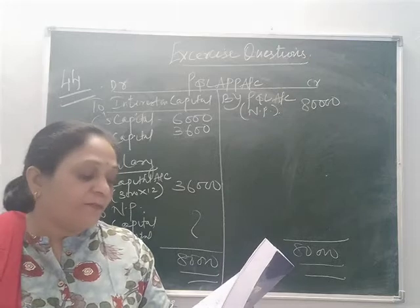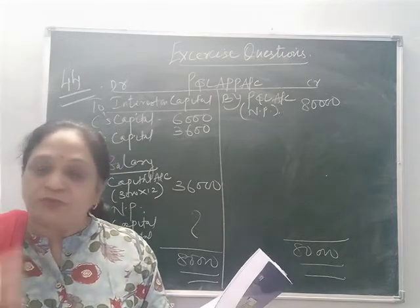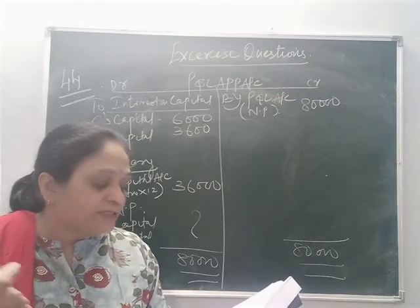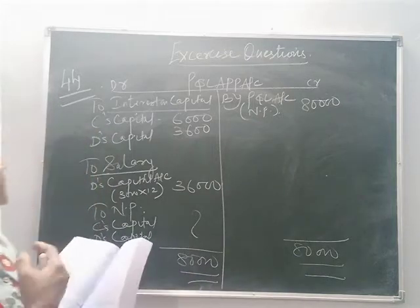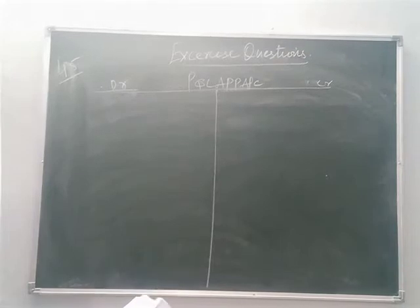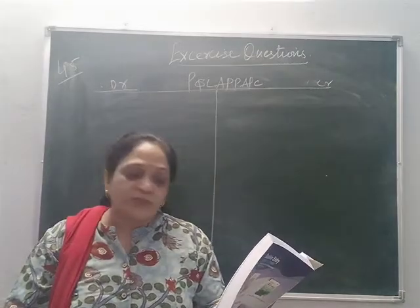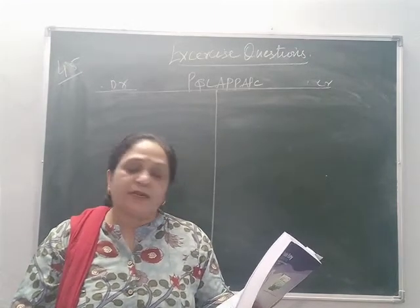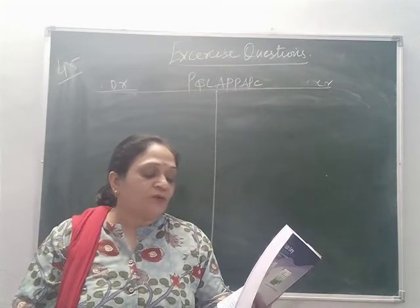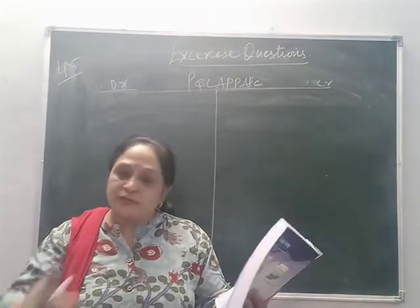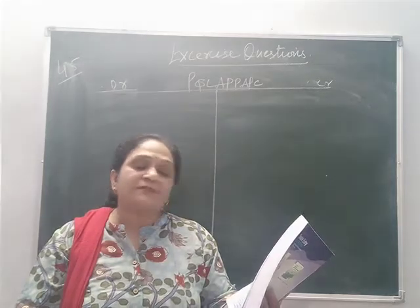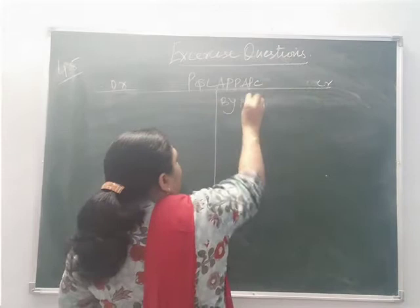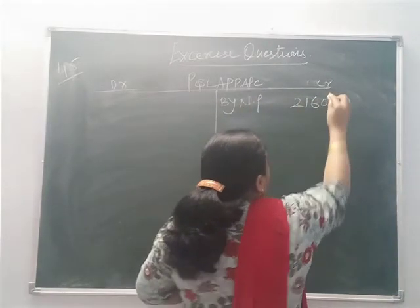In question number 45, you have to prepare the profit and loss appropriation account. All items are provided — interest on capital, interest on drawings, salary, etc. Amit and Vijay have started business on 1st April. Capitals are 2 lakh and 1 lakh 50,000. The deal provides interest on capital at 10% per annum. Amit gets a salary of 2,000 per month and Vijay 3,000 per month. Profits are shared in 3:2. Net profit for the year is 2 lakh 16,000. Start by recording net profit of 2 lakh 16,000 on the credit side, and also record interest on drawings for Amit and Vijay.